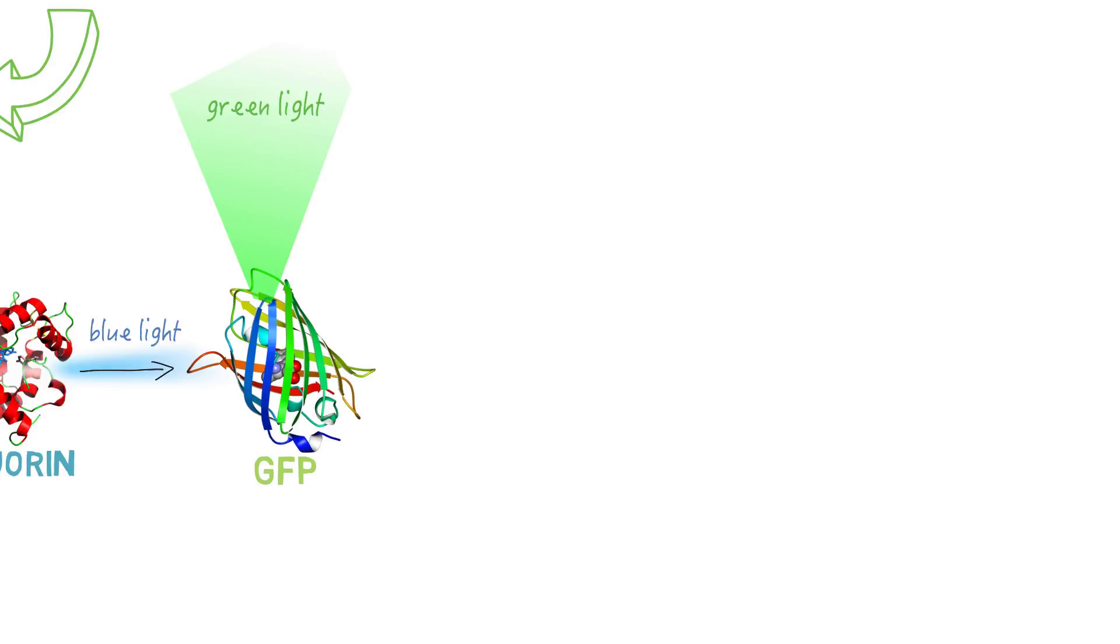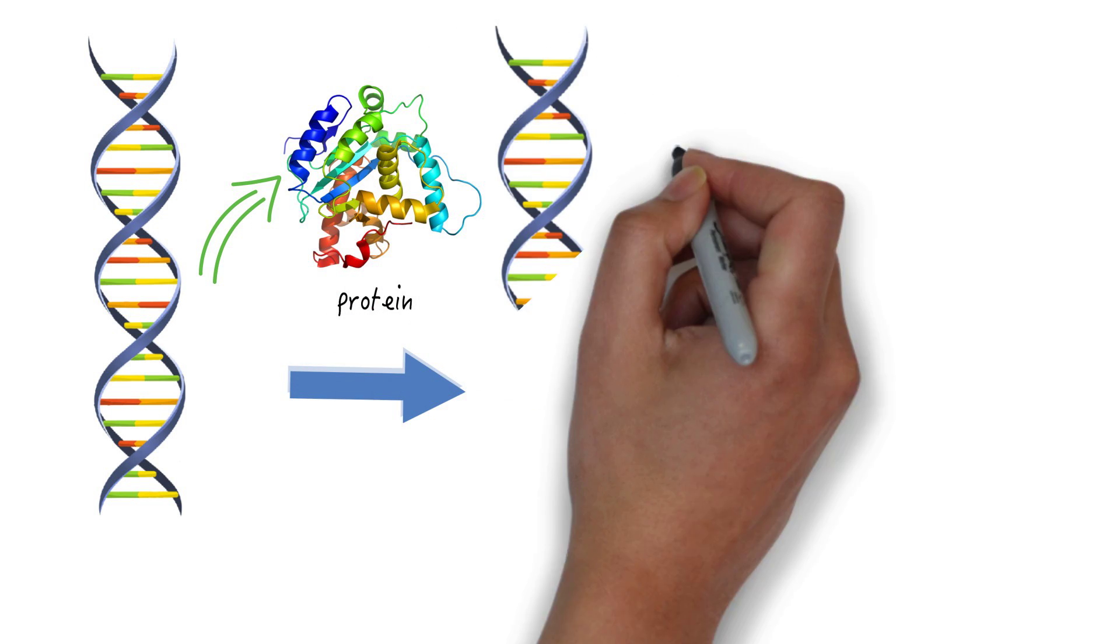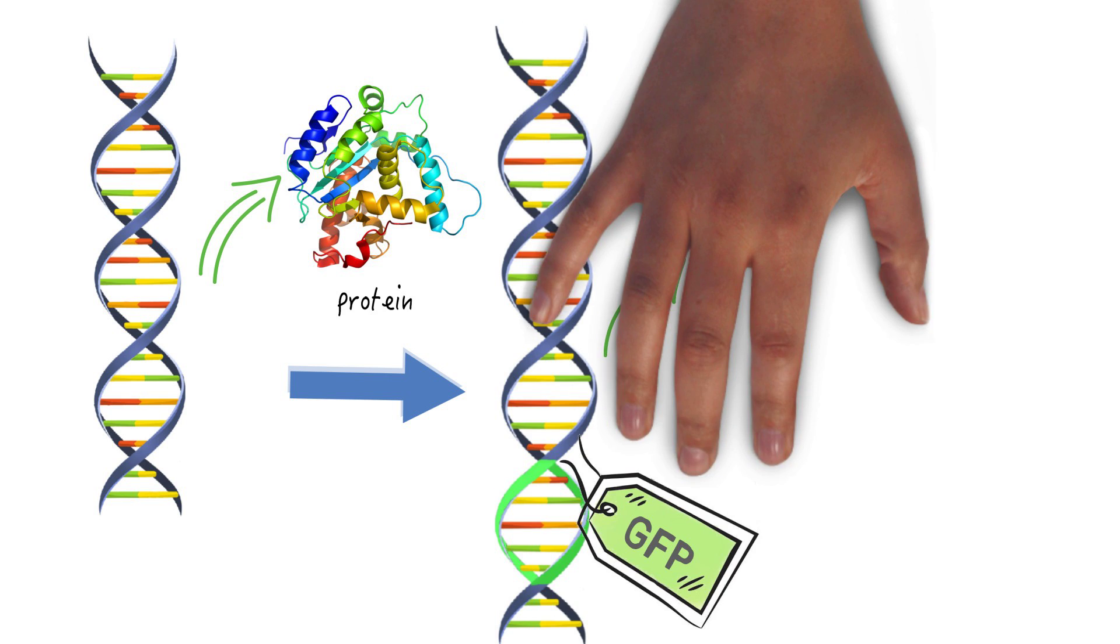Now, that may not seem like such a big deal, but the cool thing about GFP is that scientists have deciphered the gene sequence, so they can tag specific genes by inserting the GFP sequence next to the target gene.